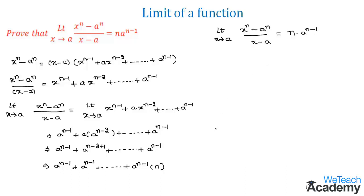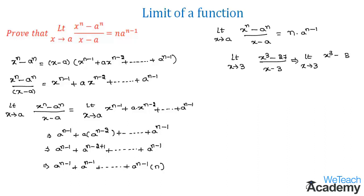Now let us solve an example based on the same concept. Let us find limit x tends to 3 of x cube minus 27 divided by x minus 3. Since 27 is 3 cube, we can write this as limit x tends to 3 of x cube minus 3 cube divided by x minus 3.